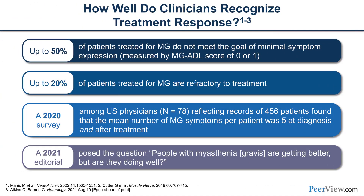We have found that up to 50 percent of treated patients do not meet the goal of minimal symptom expression, as measured by the activities of daily living score of zero or one. Twenty percent of patients treated are refractory to therapy — though that number is debated and depends upon the definition of refractoriness.